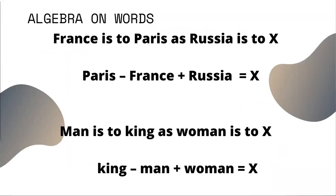The classic example everyone sees is: France is to Paris as Russia is to X. X would be Moscow in this case. You can reorganize that into a little formula: Paris minus France plus Russia equals X.